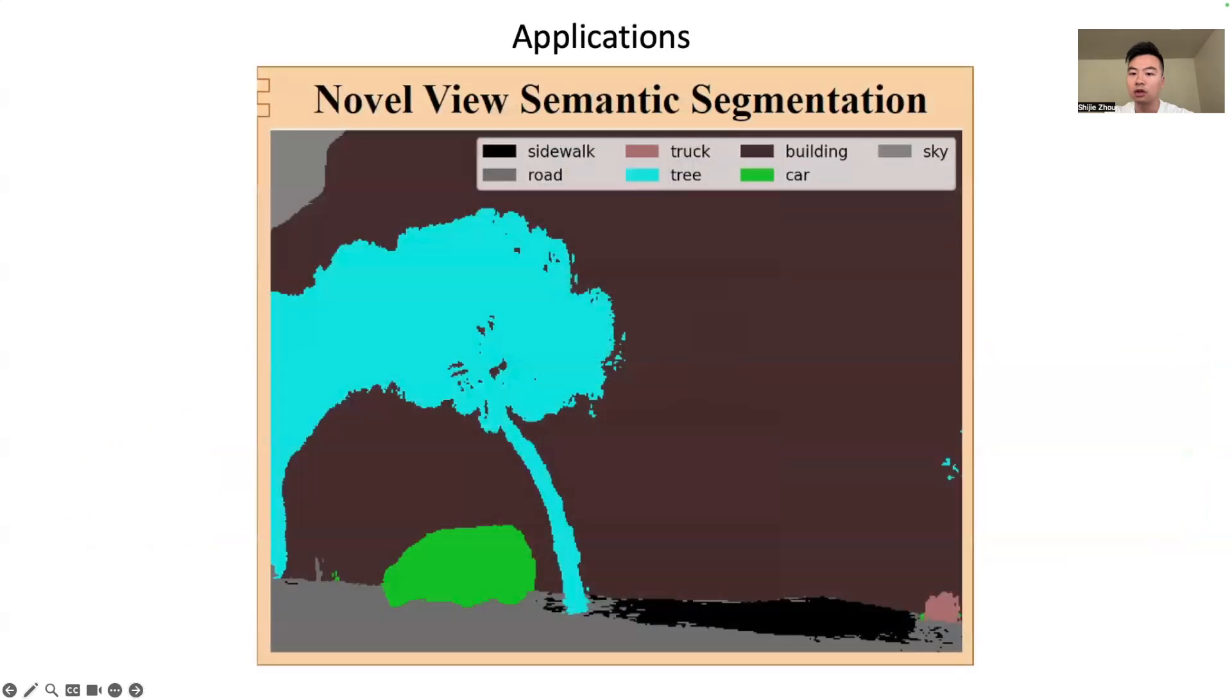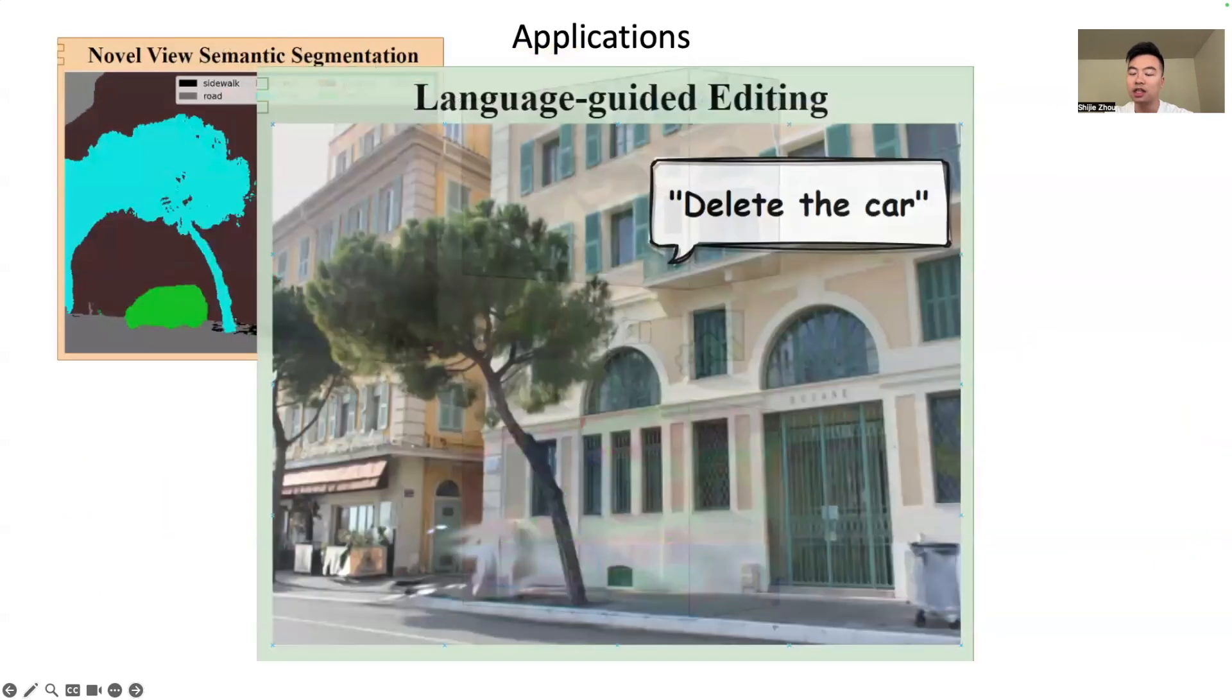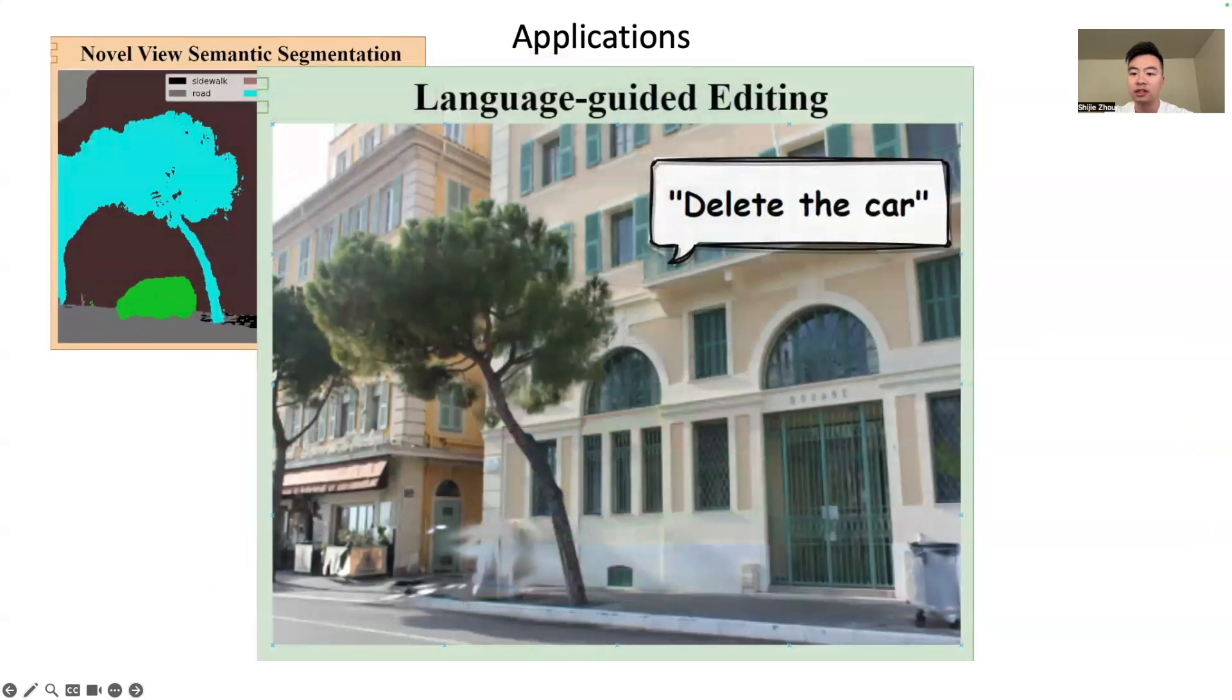Our proposed work is general. Once we have the feature fields of our target scene, we can lift any functionality in any 2D foundation model to 3D without any retraining or fine-tuning. For example, the novel view semantic segmentation by distilling features from LSEG clip model, as well as language-guided editing. Notice that editing is operated in 3D space, and the car is deleted while the background is still preserved.